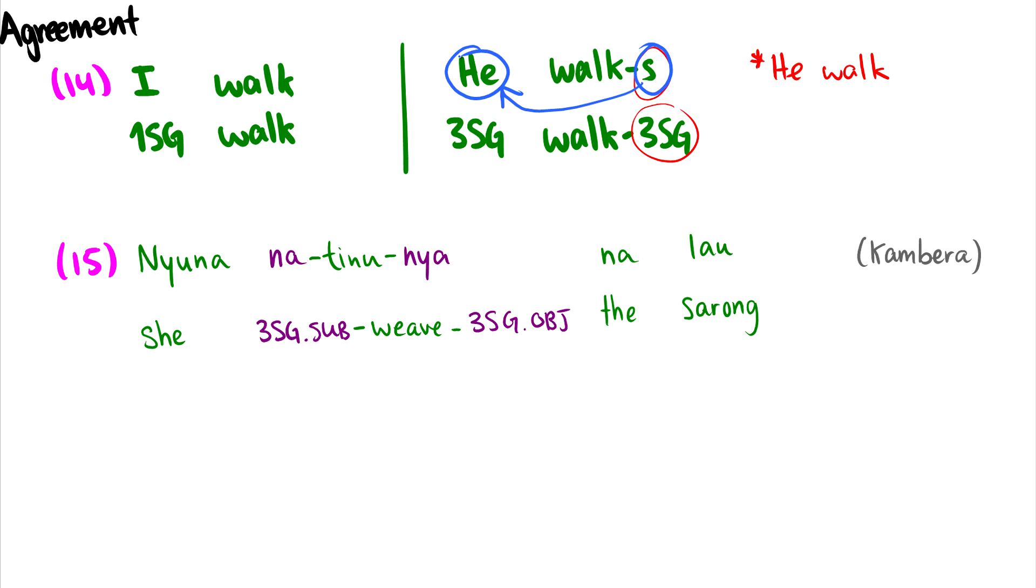Let's take a look at Canberra. So Canberra has agreement on verbs for the subject and the object. So here we have 'she' and we have 'the sarong.' So these are third singular. So on the verb, for 'she weaves the sarong,' we have a third singular subject marker that agrees with the subject on the verb. And then we have a third singular object marker on the verb that agrees with the object. So if we had the word 'I' as the subject, then we would need a different marker on the verb as a subject in order to get a correct and grammatical sentence.